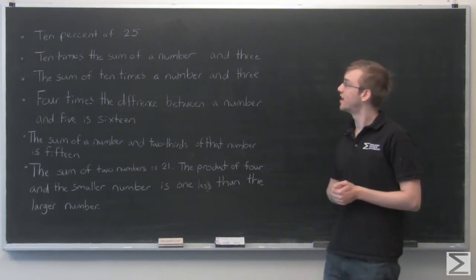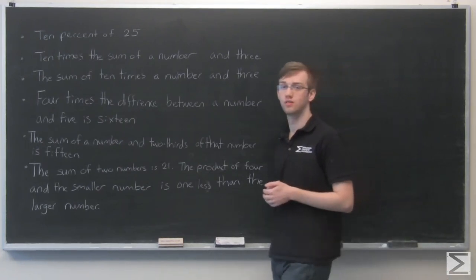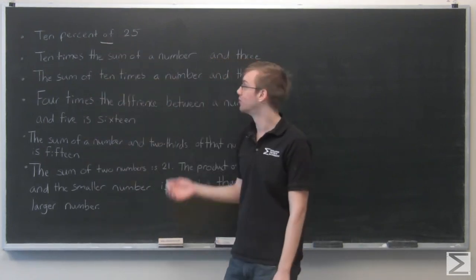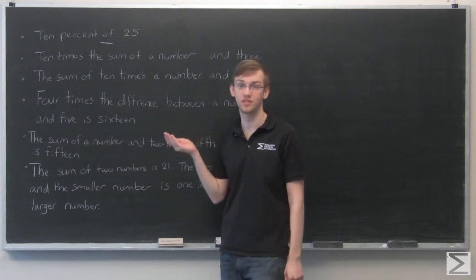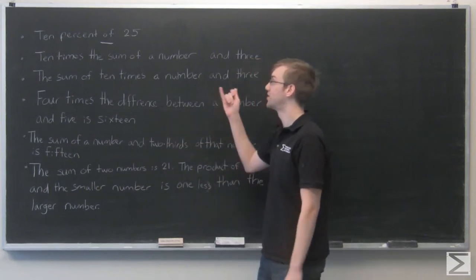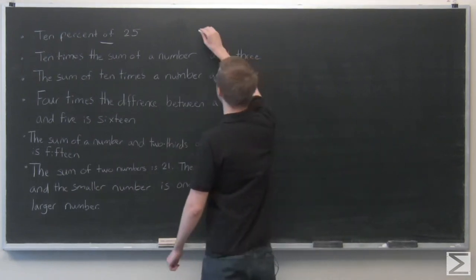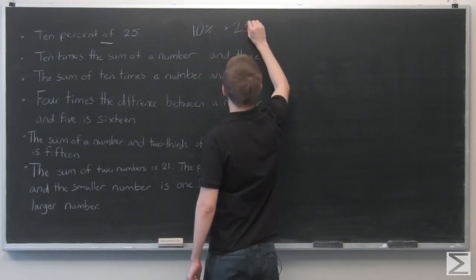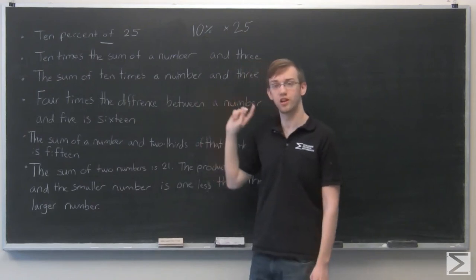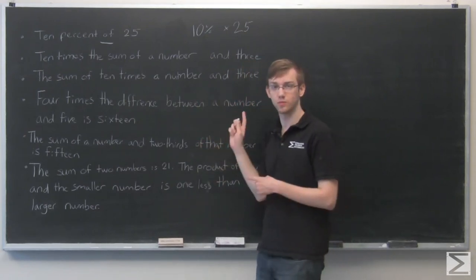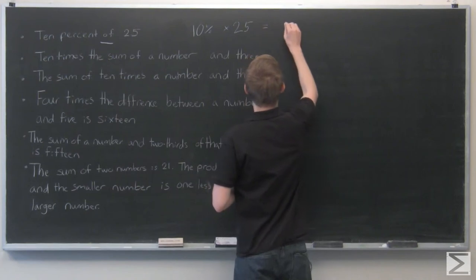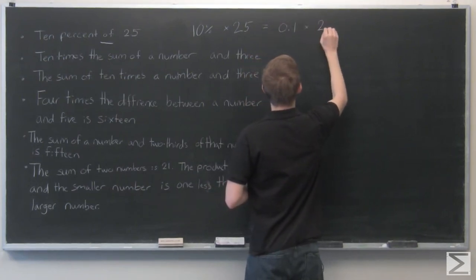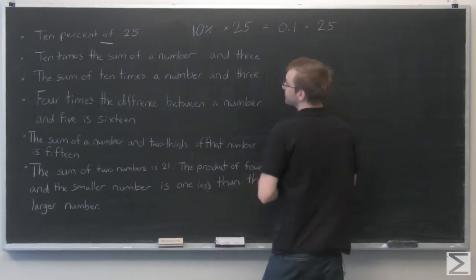The first one is 10% of 25. What operation is being done here? We see the word 'of,' and remember, we said when you see the word 'of' in this context, that usually means times. So 10% of 25 means 10% times 25. And as we know, to convert a number from percent into a decimal, just move the decimal point over two places. That was easy.